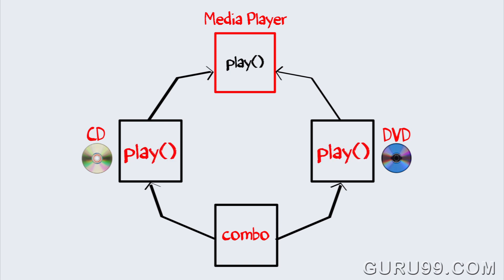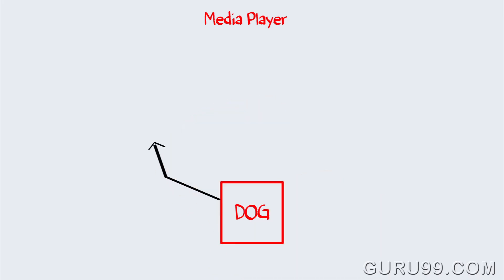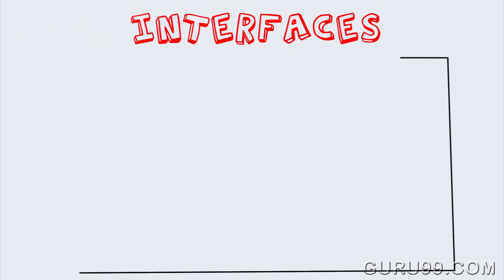Which play method should it inherit? This can cause a serious design issue, and hence Java does not allow multiple inheritance. But suppose you have requirements where your class Dog is inheriting class Animal and class Pet — you cannot extend two classes in Java.